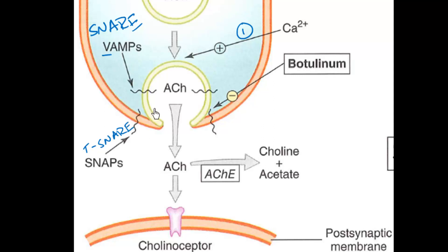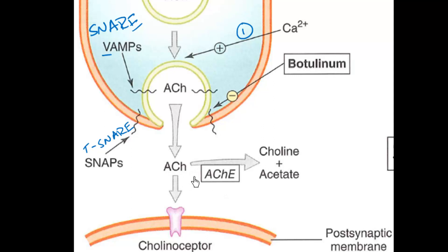When these docking proteins interact, it allows the expulsion of the neurotransmitter into the synaptic cleft. Now that acetylcholine is there, it does not last very long. Acetylcholinesterase quickly metabolizes it and is the primary determinant of the duration of action of the neurotransmitter.